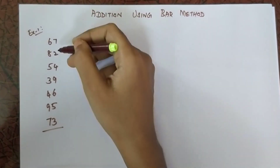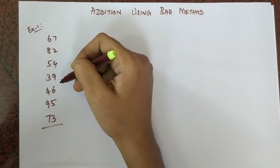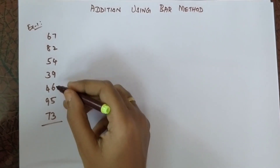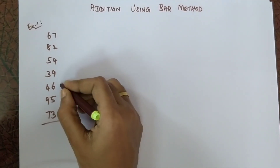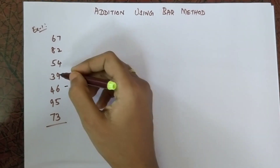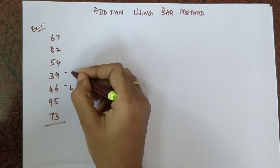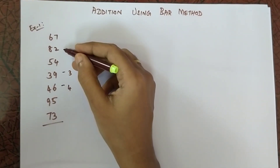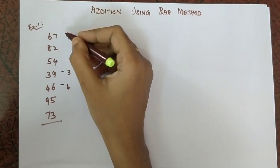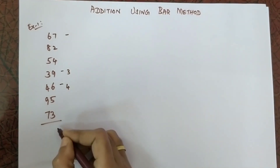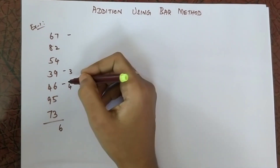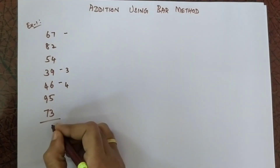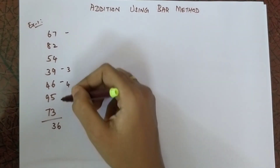Let's see example one. We are going to add all the single-digit numbers from this side using the bar method. 3 plus 5 is 8, 8 plus 6 is 14 — so bar 4. 4 plus 9 is 13 — bar 3. 3 plus 4 is 7, 7 plus 2 is 9, 9 plus 7 is 16 — so bar 6. The number of bars is 1, 2, and 3.